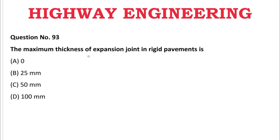Next question: The maximum thickness of expansion joint in rigid pavement is — A: 0 mm, B: 25 mm, C: 50 mm, D: 100 mm. The correct answer is B, 25 mm.